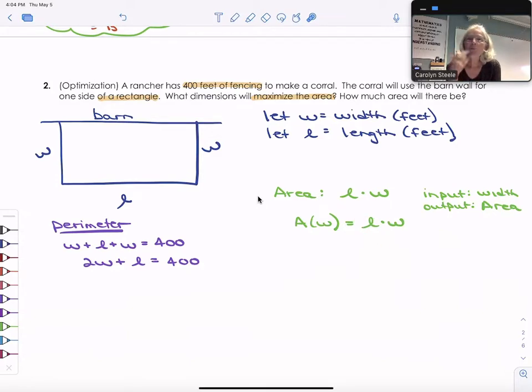And we're going to use the same substitution technique that we used before with this idea of the systems of equations. So I'm going to come back to my perimeter equation. And I'm going to isolate l by subtracting 2w from both sides. So l is equal to 400 minus 2w.